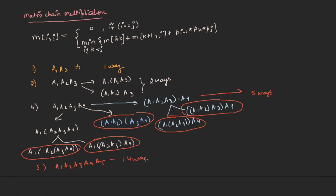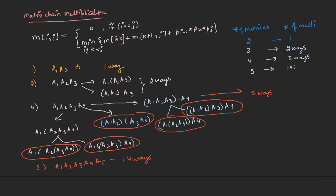In the same way, if we have five matrices A1, A2, A3, A4, and A5, there are 14 ways to multiply them. Let us see the pattern. Number of matrices versus number of multiplications: 1 matrix → 0 ways, 2 matrices → 1 way, 3 matrices → 2 ways, 4 matrices → 5 ways, 5 matrices → 14 ways.